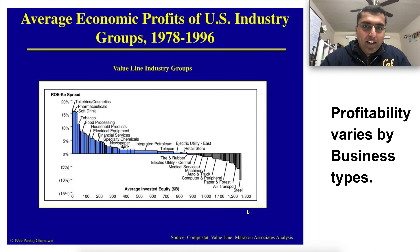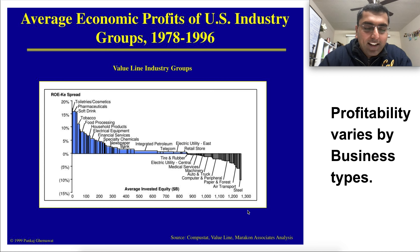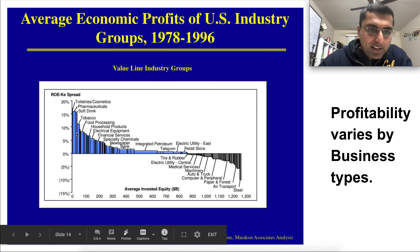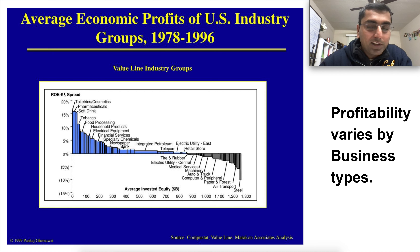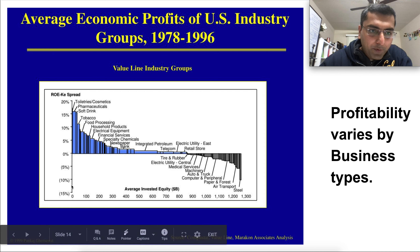Let's look at different industries in the United States over the last 20 years, from 1978 to 1996. In the second chapter, we see an image showing a lot of industries which have high profitability, like pharmaceuticals at 15%. ROE is Return on Equity and K is Cost of Capital. If you look at your returns on your equity — the money you've invested — and subtract the cost of capital, which is like the treasury yield in the United States, you get profitability. This is the profitability spread on the y-axis.